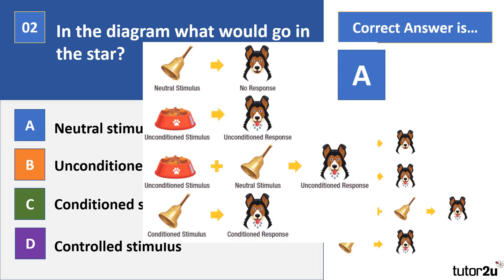The correct answer is A — neutral stimulus. This is an outline of Pavlov's research into classical conditioning, where the neutral stimulus initially produces no response, but after multiple pairings with an unconditioned stimulus, the neutral stimulus becomes the conditioned stimulus, producing the conditioned response of salivation. D — controlled stimulus — is a term students often use incorrectly instead of conditioned stimulus. Pavlov is named on your specification, and you're expected to outline the work of Pavlov and Skinner and discuss their contributions to psychology.